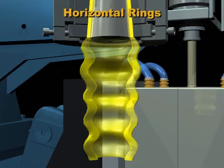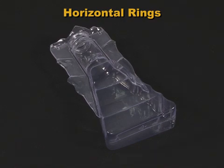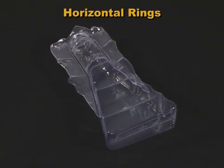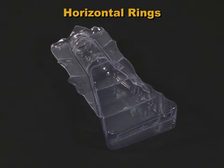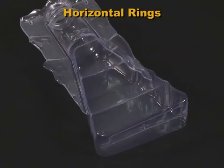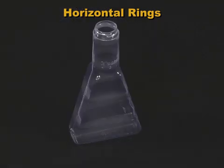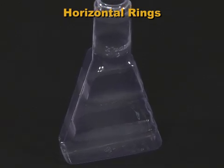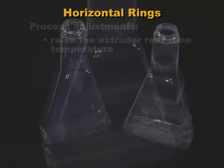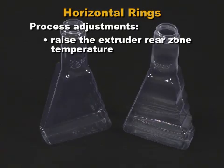Horizontal bands or rings can develop in the parison as it is extruded. These bands are a variation in parison thickness and can be caused by the extruder screw. As the screw rotates, partially melted granules in the feed zone of the extruder can surge, giving a pressure pulse to the melted plastic. Pressure surges transmitted to the die head cause horizontal bands in the final product that match the screw RPM. Often raising the extruder rear zone temperature will solve the problem by starting the melting process earlier.